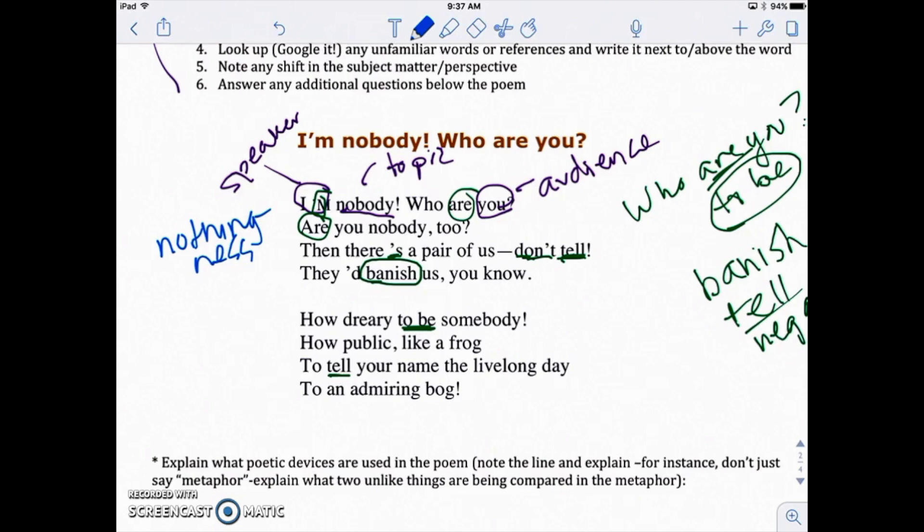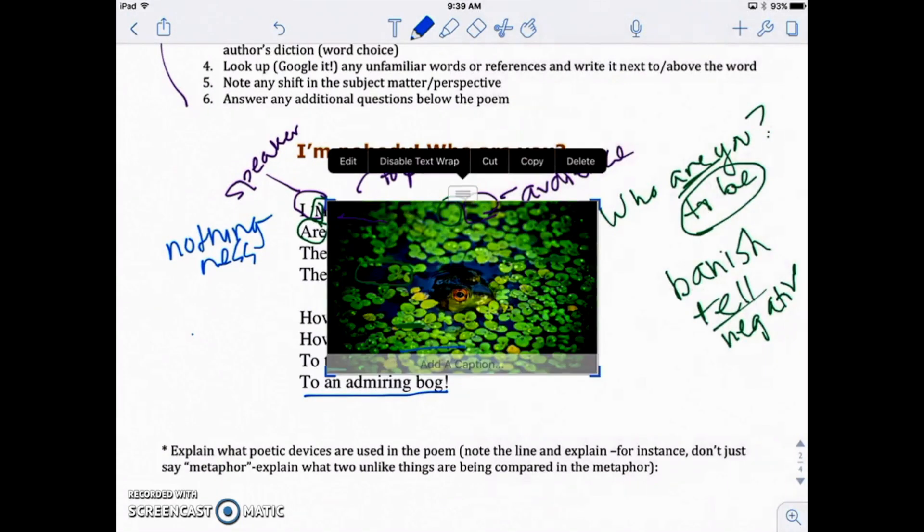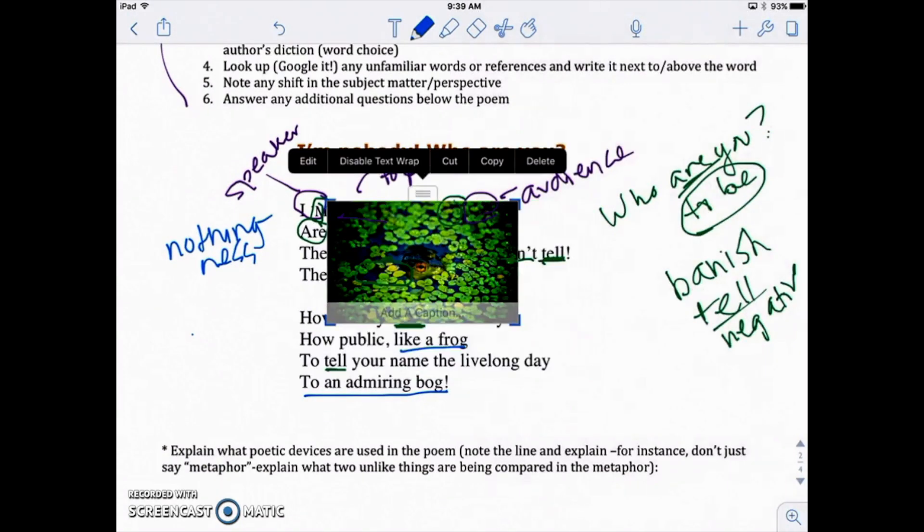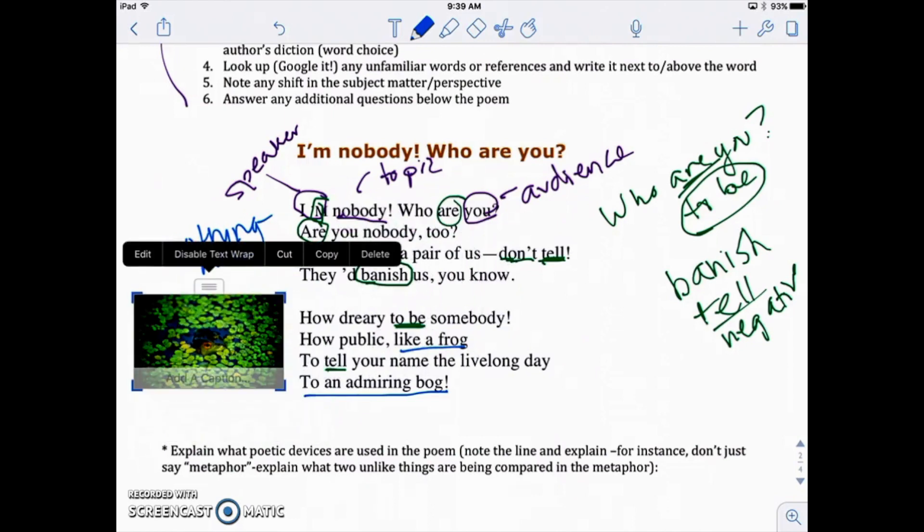I'm going to put this over there too. So we've got an image of nothingness here. Okay. Let's look at the second stanza though, because I think there's a more powerful image there, even more powerful image. It says, how dreary to be somebody, how public like a frog to tell your name, the live long day to an admiring bog. So here we've got an image like a frog to an admiring bog. And maybe you don't know what that word bog means. And so that might be one that we have to look up. In fact, that's our next step.